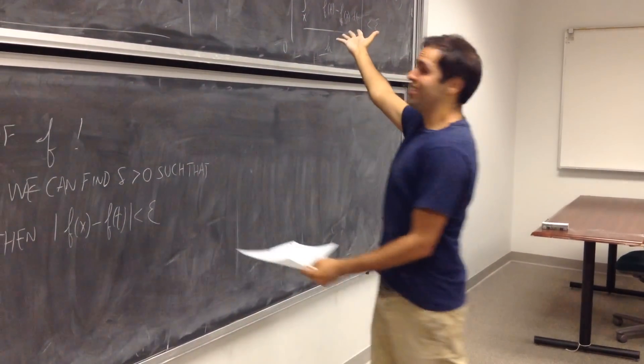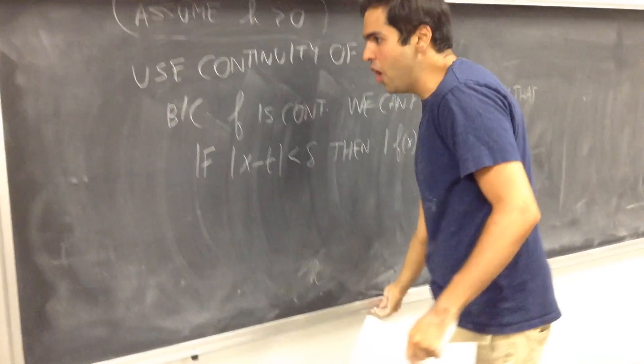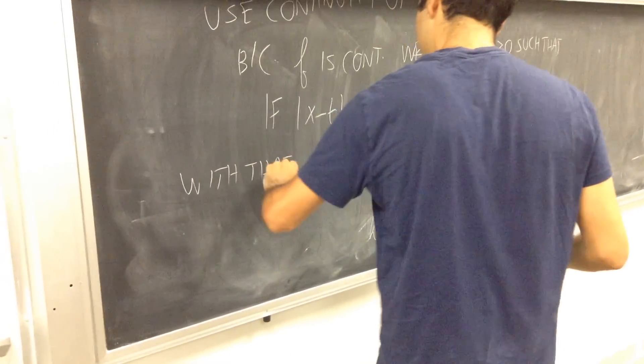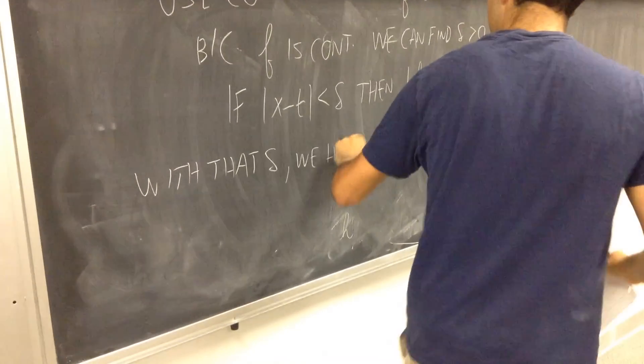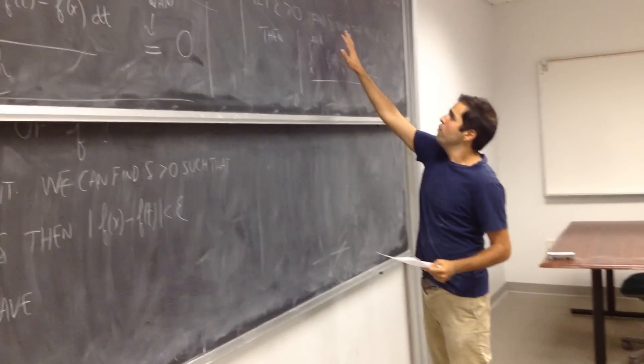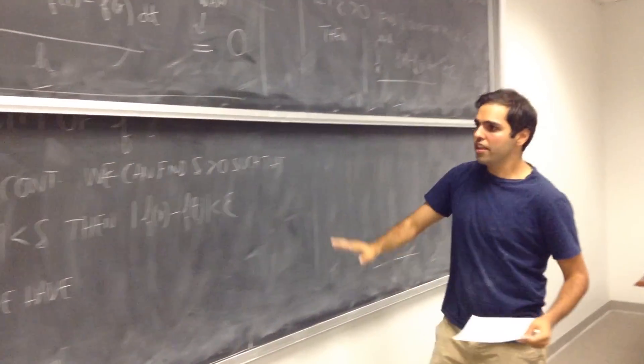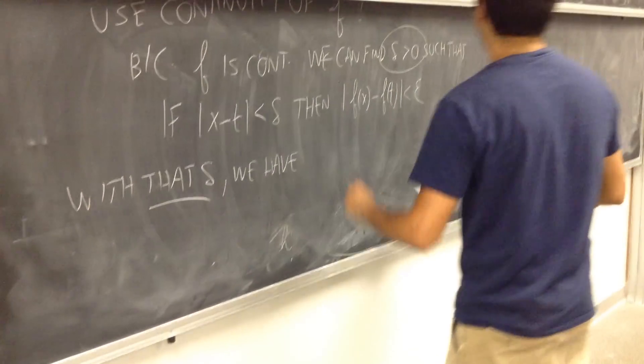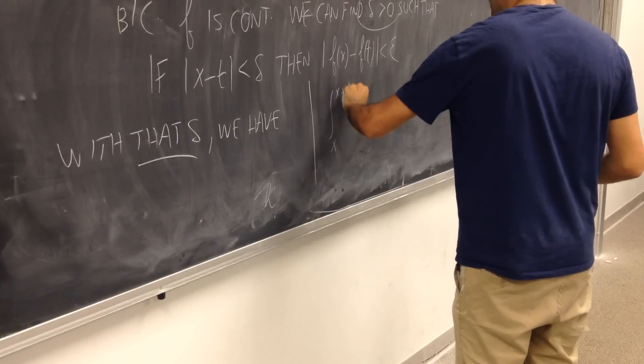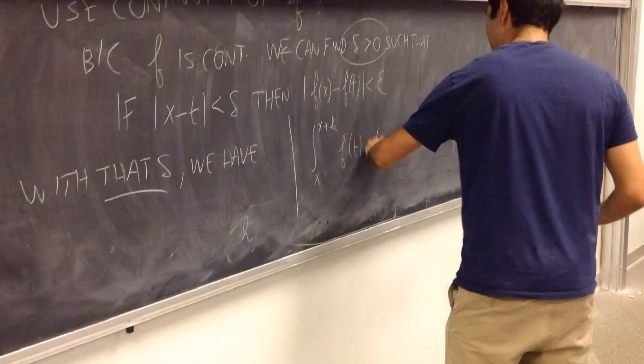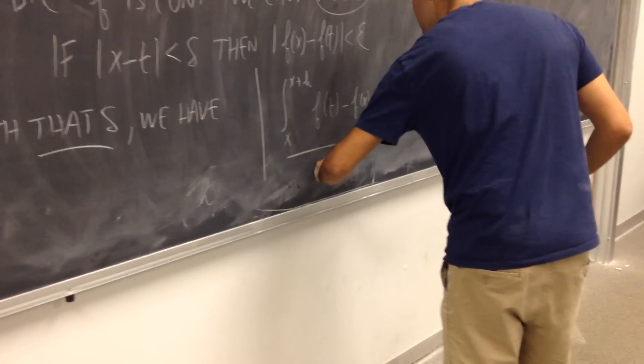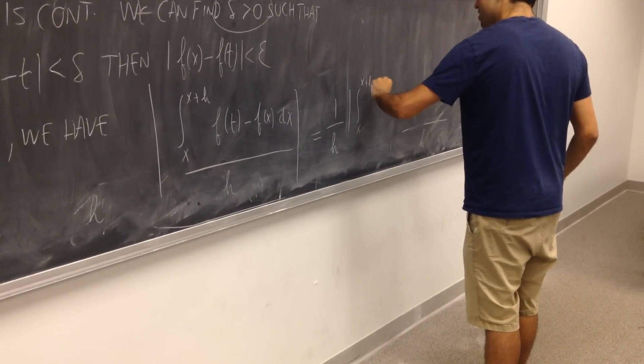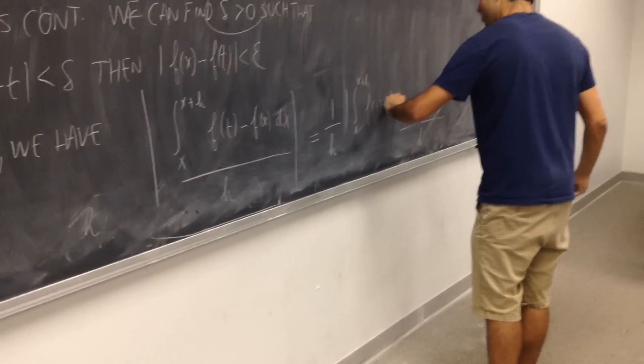Alright, once we have that, we're actually done, because all we need to do is estimate this integral. So with that delta, what I mean is we want to find delta such that this is true. This is precisely the delta that we want. So if one, let delta prime be that delta, we have in fact that absolute value of integral from x to x plus h f of t minus f of x dx over h, well again h is positive, so we can write this this way: integral from x to x plus h f of t minus f of x dx.